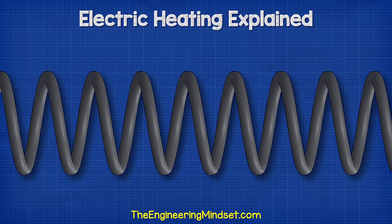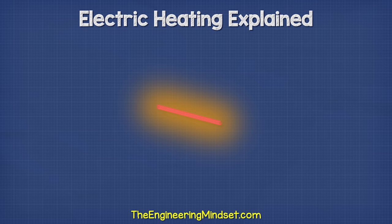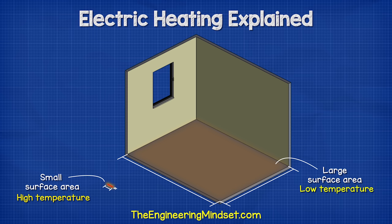With all of these methods, the heating element has a small surface area, so to transfer sufficient thermal energy, we need the heating element to reach very high temperatures. However, with underfloor electric heating, the surface area is very large as it covers most of the room. So the surface temperature is much lower, and the heat is distributed evenly across the entire room.